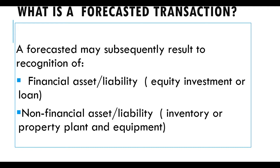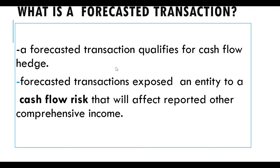A forecasted transaction may subsequently result in the recognition of either a financial asset or liability — for example, equity investments or loans — or a non-financial asset or liability. Examples include a forecasted transaction to purchase inventory or property, plant, and equipment.